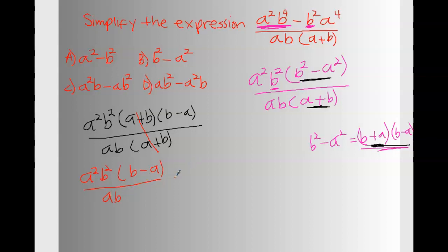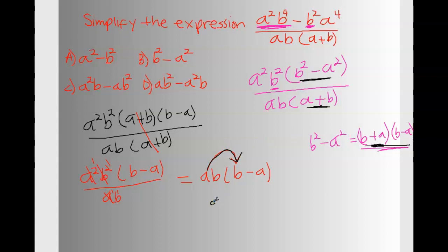Every variable is of power one here, so this A can cancel with this A, and they reduce to one. So here we are getting B times (B minus A). We look at the multiple choice and don't see it directly, so we need to remove the parentheses — distribute B to both terms — and that gives us B squared, then minus AB. We check if the answer is there, and yes it is.